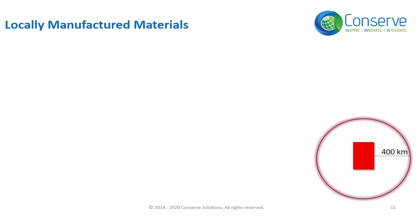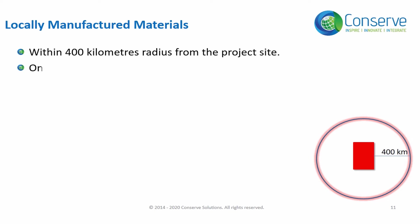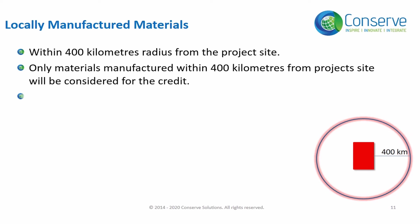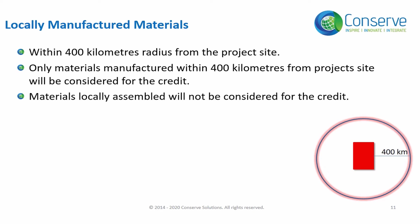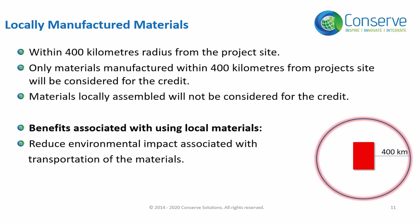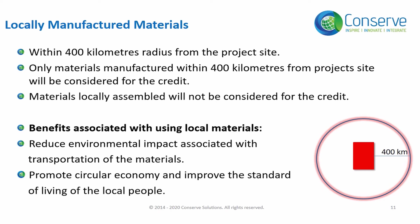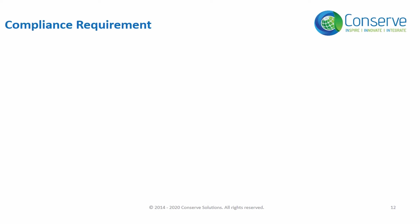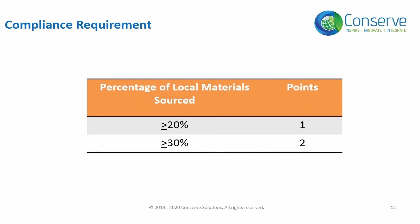The next strategy is to use materials manufactured locally. Locally here means within a 400-kilometer radius from the project site. Only materials manufactured within 400 kilometers from the project site will be considered for this credit — materials that are only locally assembled will not qualify. There are two benefits: first, using local materials reduces the environmental impact associated with transportation; second, it promotes circular economy and improves the standard of living of local people. Points are awarded based on the amount of money spent on local materials.